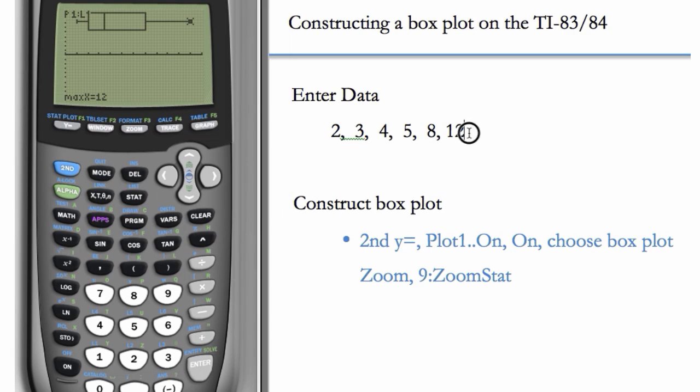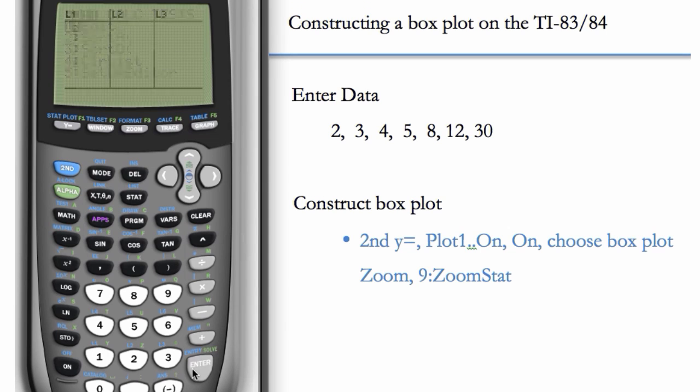Now, let's add a data point to our set here and see what happens. So let's go back to StatEdit and add the number 30. And now we want to redraw the box plot. So we can go to 2nd Y equals, hit enter. You can see that everything is selected. It's on, we have the right box plot selected, our data is still in L1. So this is fine. So now we can go back to Zoom and choose number 9, Zoom 9. And there's our revised box plot.